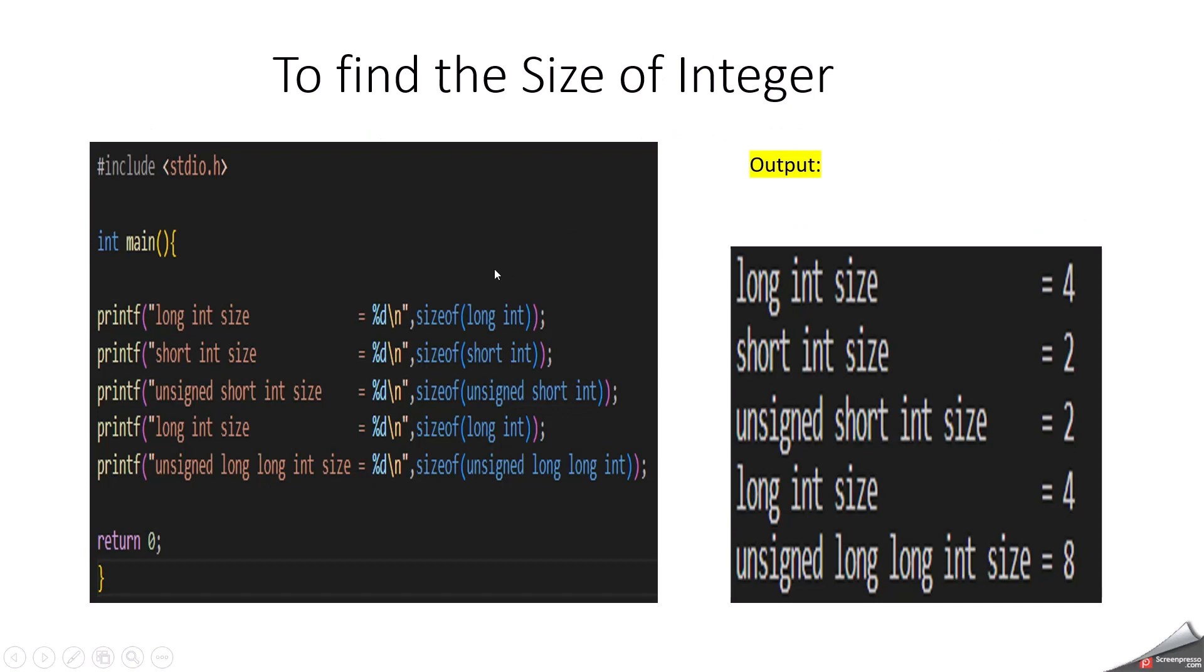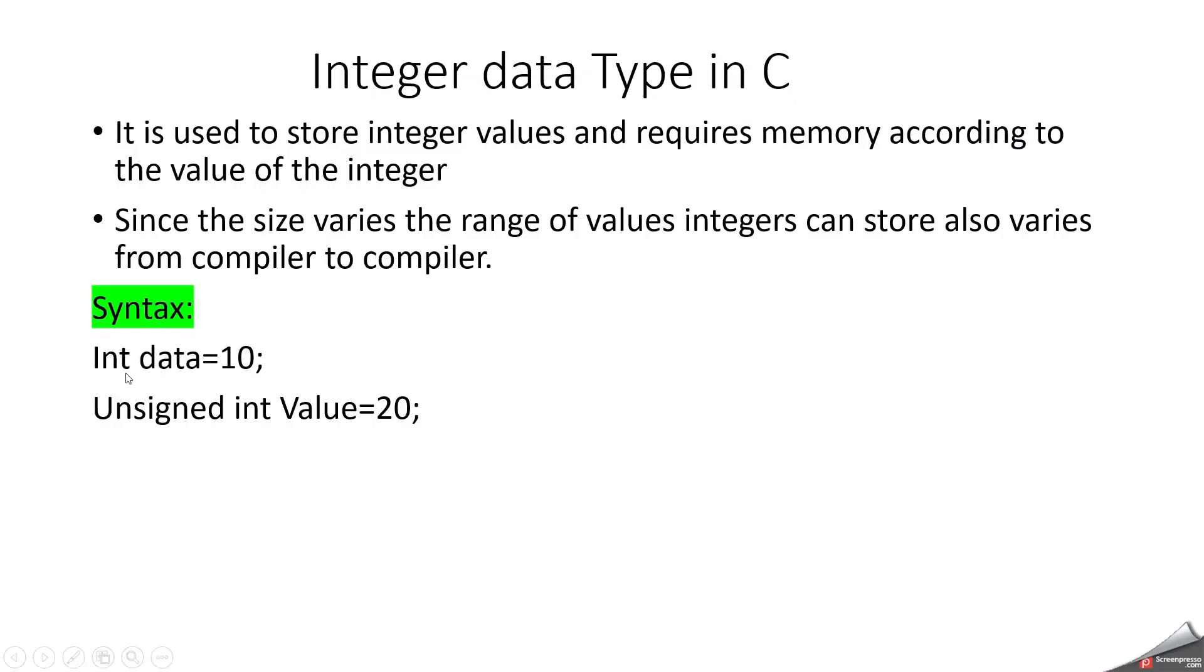This is a simple program to find out the size of integer. If you want to understand in your computer or in your compiler or in your IDE you are typing a code and you want to understand size, then you can use this program. Here I have calculated long integer size, short integer size, unsigned short integer size, and long integer size and unsigned long long integer size. Basically in my program, the size of integer is 4 bytes. Based on your compiler you can understand how much storage will be taken when you are declaring an integer variable. To declare an integer variable you have to use the keyword int, then you have to mention your variable name.